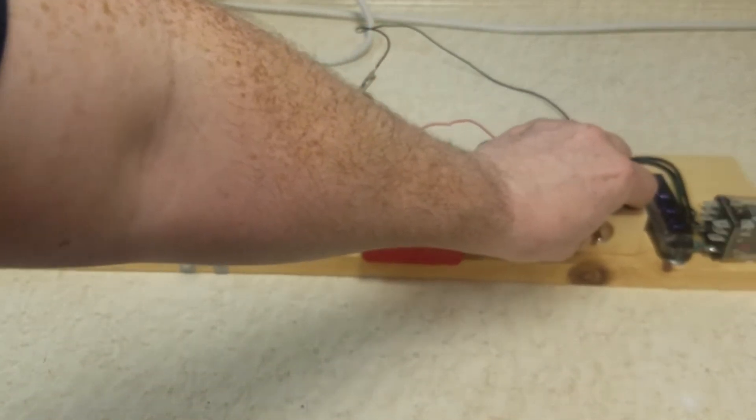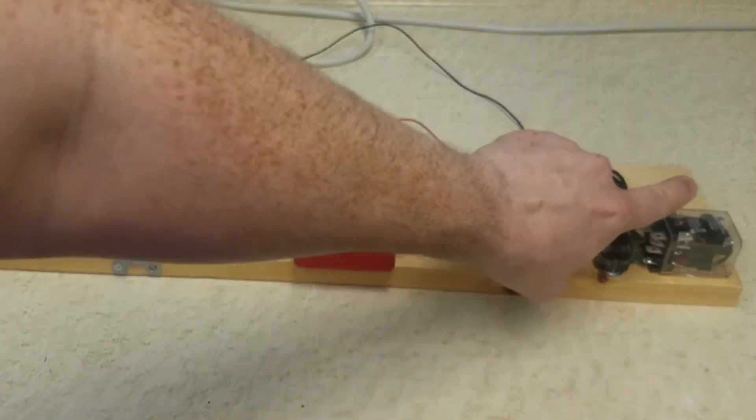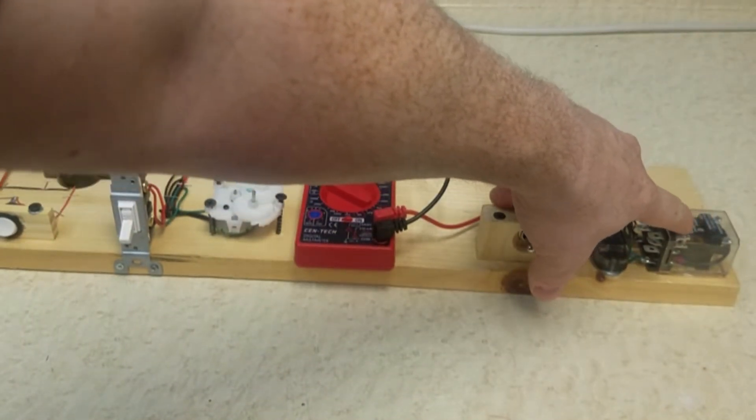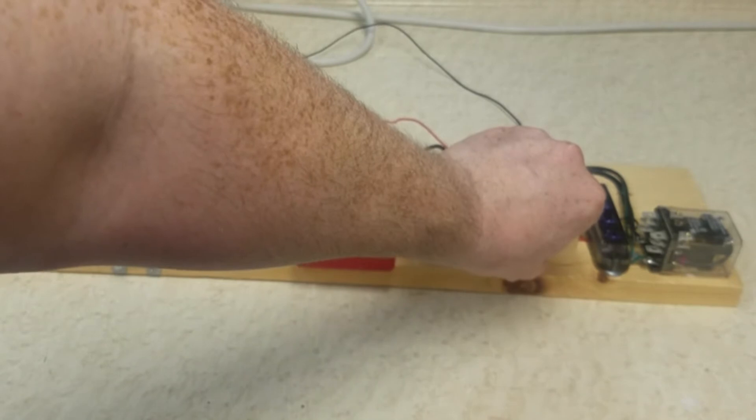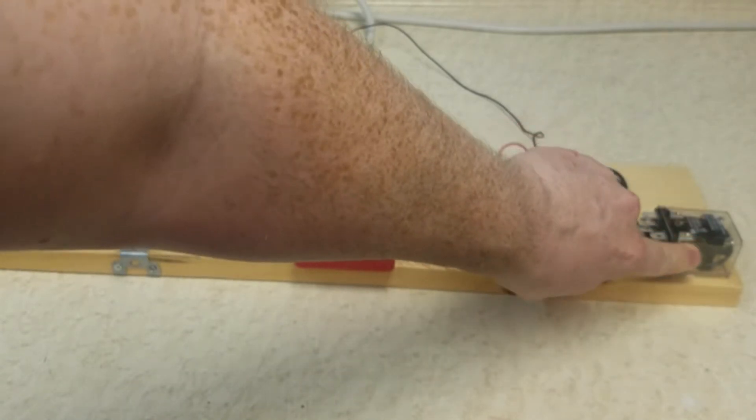You can see here it's turning this relay, which is pretty cool. This is a see-through relay with clear plastic around it, so you can actually see the contacts moving inside with the electromagnet.